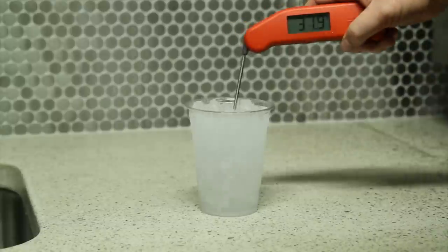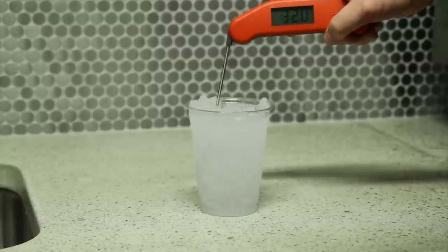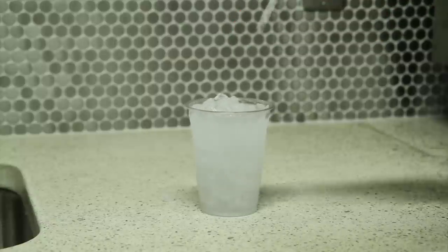Step four: insert the probe of the thermometer being tested about two inches or five centimeters into the ice mixture and gently stir while you take your reading.